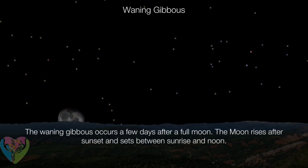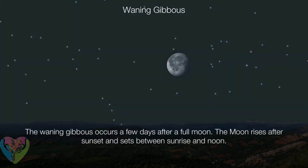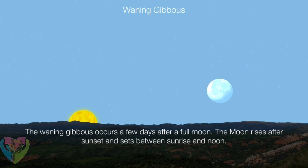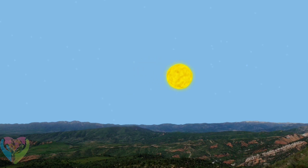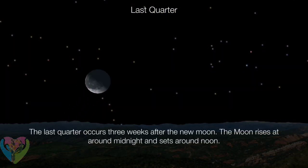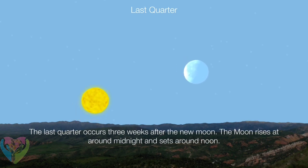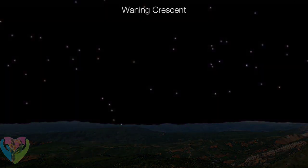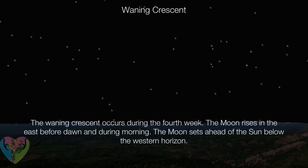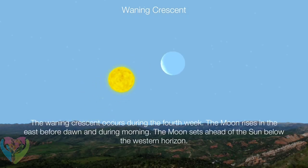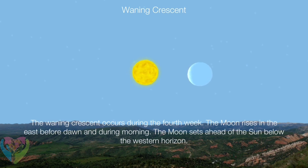The waning gibbous occurs a few days after a full moon — the moon rises after sunset and sets between sunrise and noon. The last quarter occurs three weeks after the new moon; the moon rises around midnight and sets around noon. The waning crescent occurs during the fourth week — the moon rises in the east before dawn, and sets ahead of the sun below the western horizon.